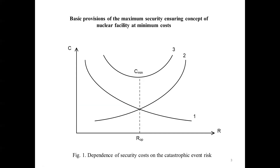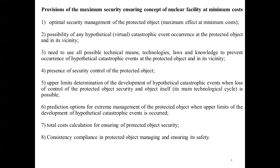The second curve is the cost of eliminating the consequences of a hypothetical catastrophic event. In some cases, this technology is called insurance cost. Here, the higher risk leads to higher costs. The third curve shows the total costs of both technologies. The situation determined by the point of intersection of the first and second curves is the situation of optimal security management of the protected nuclear facility. Under this situation, the optimal value of the risk of occurrence of a hypothetical catastrophic event requires minimal costs.